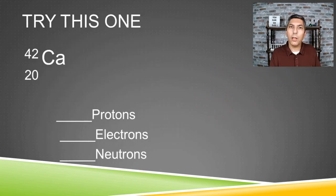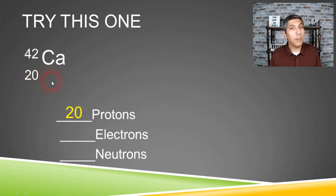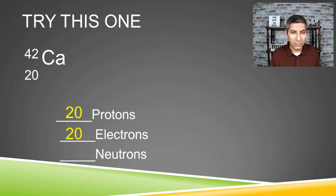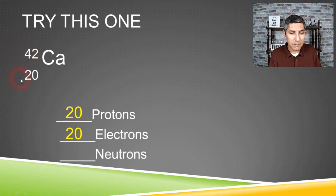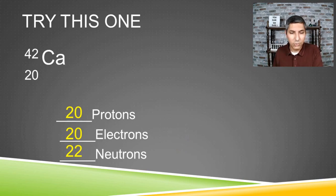Now let's take a look at this other symbol and see if we can determine the number of protons, electrons, and neutrons in this isotope. The number of protons is determined by looking at the atomic number — so it's 20. How many electrons? Any neutral atom should have the same number of protons as electrons, so it's also 20. How about the number of neutrons? We subtract the top number minus the bottom number — the mass number minus the atomic number. So that's 42 minus 20, which equals 22.